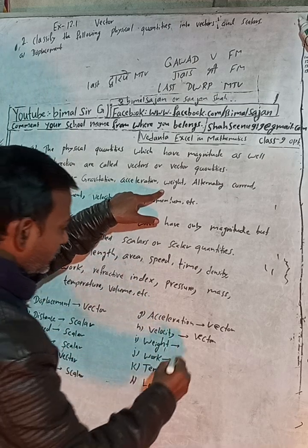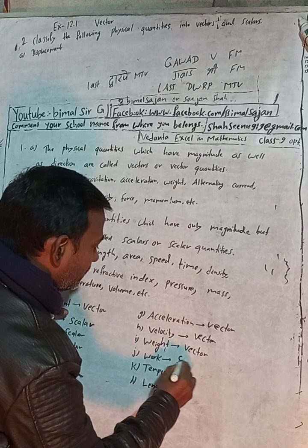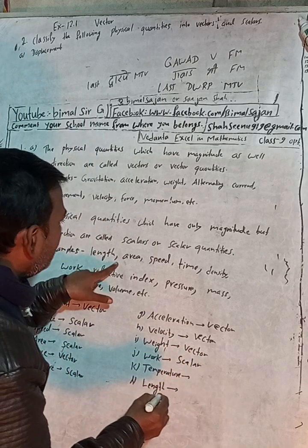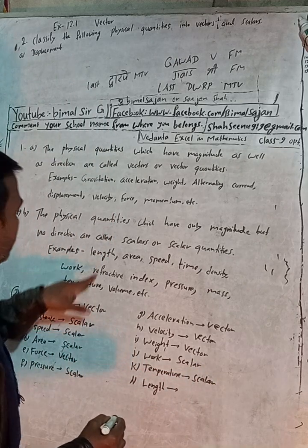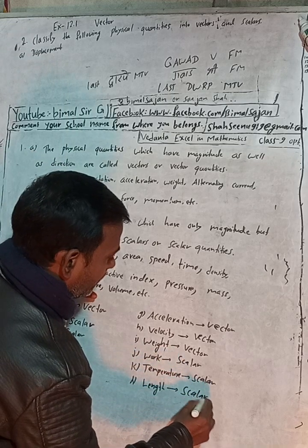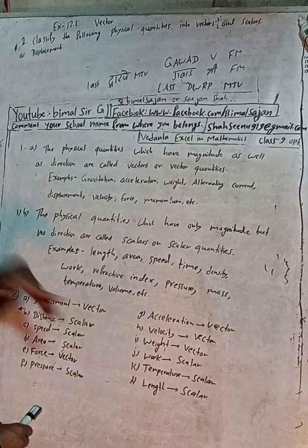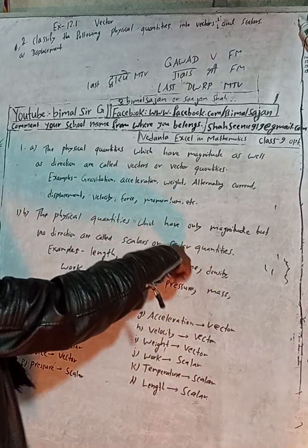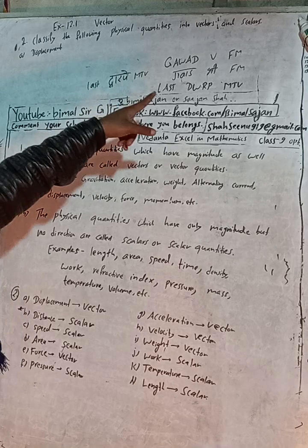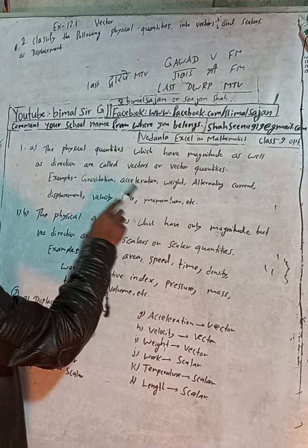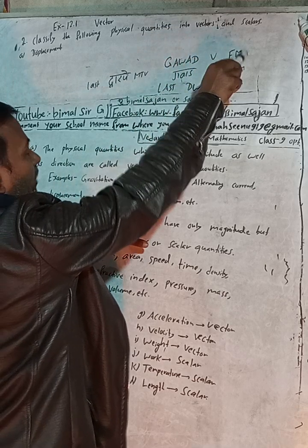The question asks you to classify the following physical quantities into vector and scalar. For scalar and vector classification: weight W, alternative current D, displacement V, velocity, force and momentum are among the quantities listed.